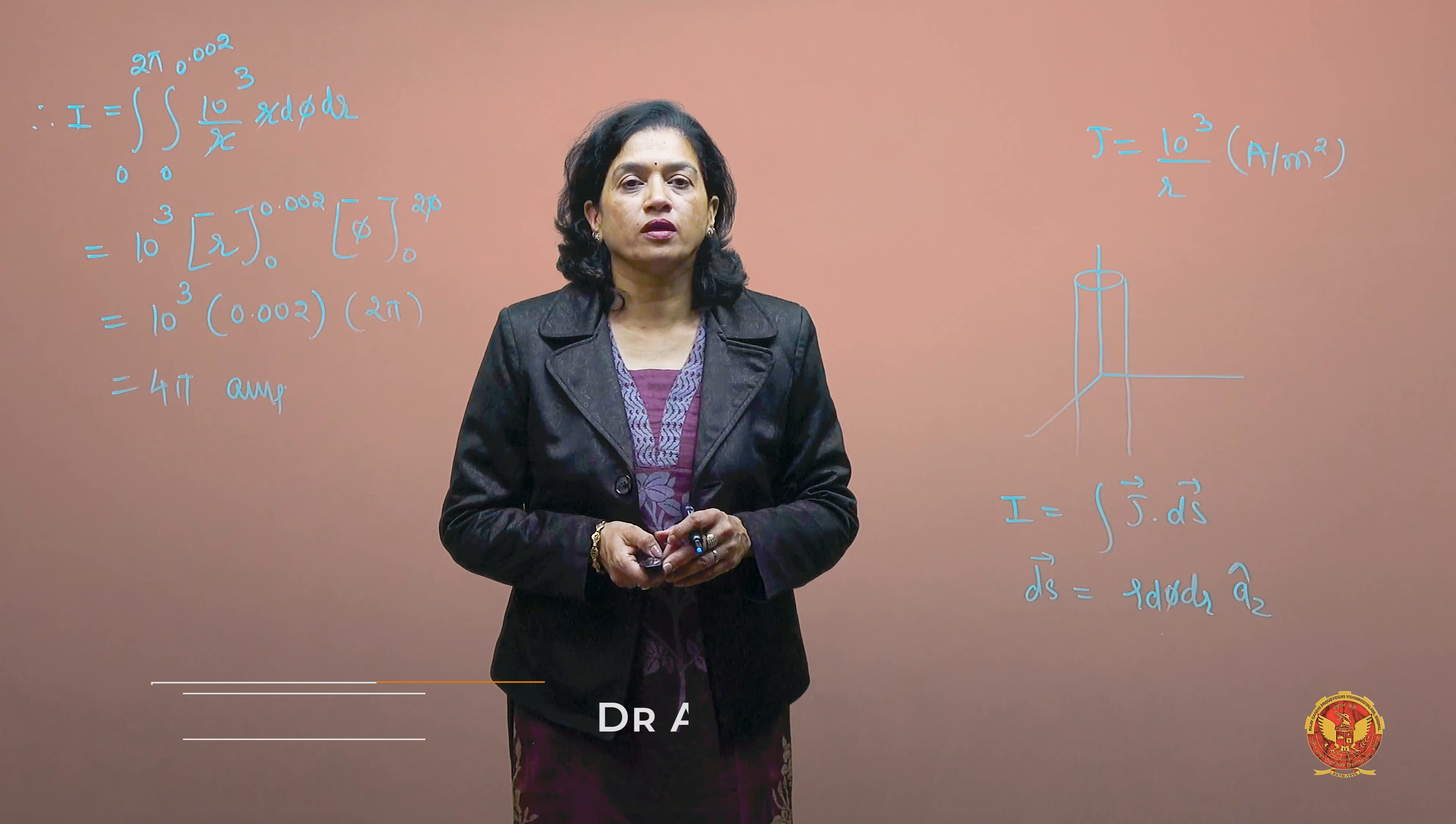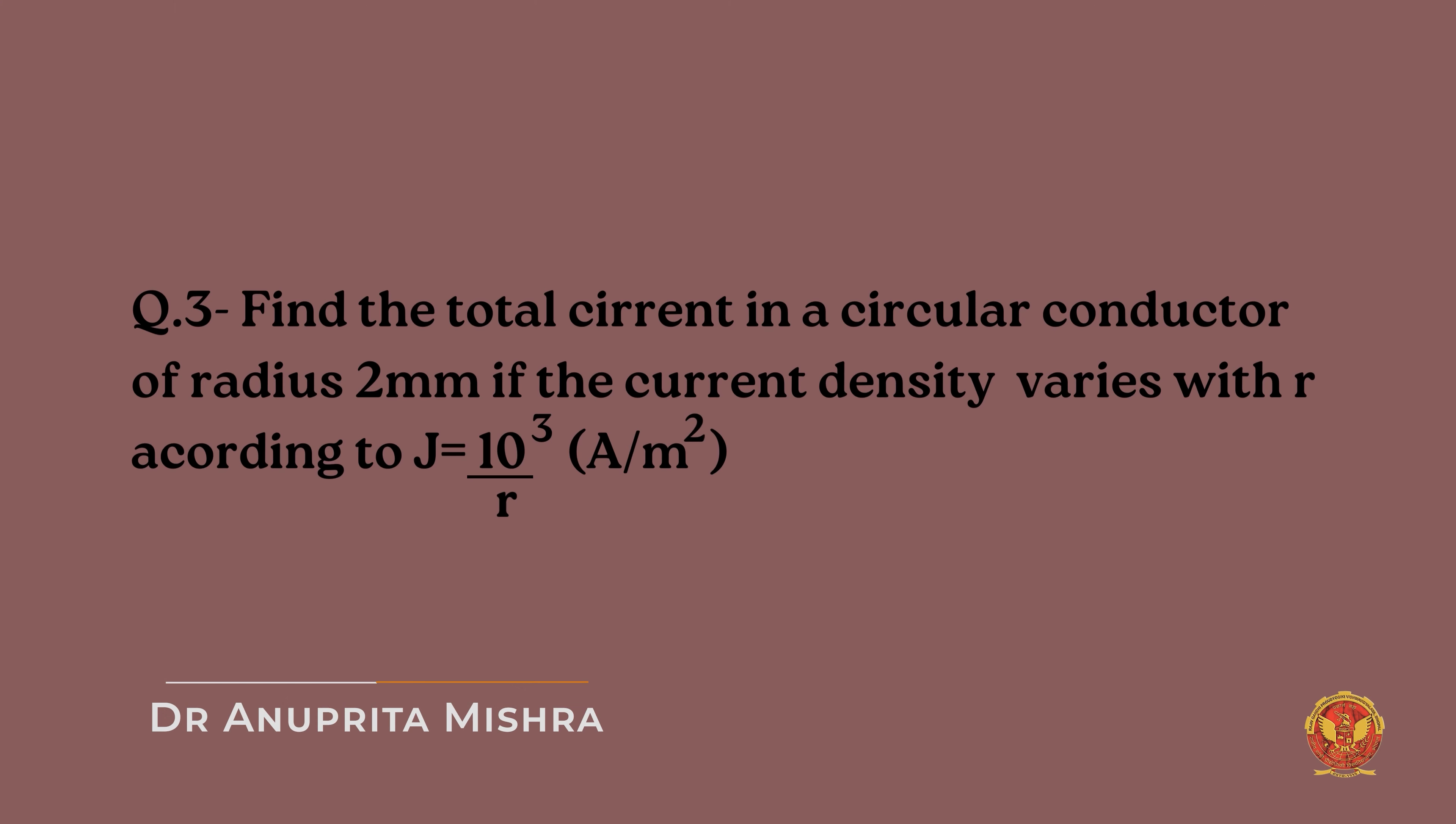We are going to discuss a problem related to J which you are watching on screen. Find the total current in a circular conductor of radius 2 mm if the current density varies with r according to J = 10³/r amperes per meter squared.